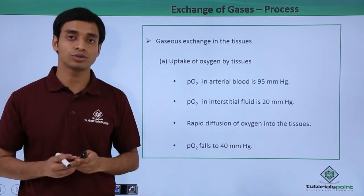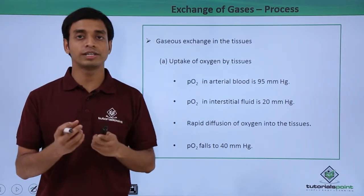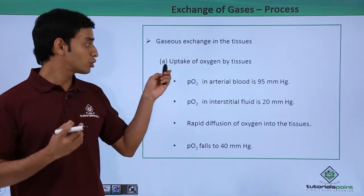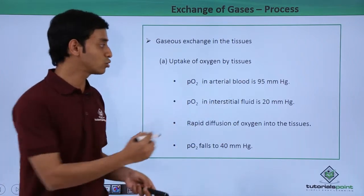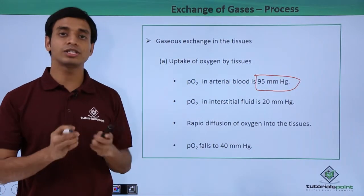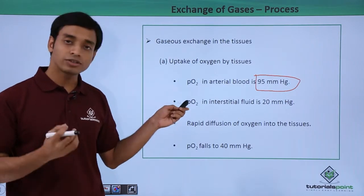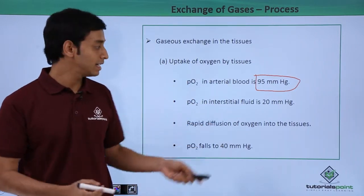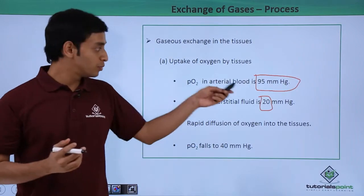Now let us look at the exchange happening in the tissues. The blood has been oxygenated while traveling through the lungs, and the partial pressure of oxygen in this oxygenated blood has raised to about 95 mmHg. This blood reaches each and every cell and tissue of our body, whereas the partial pressure in the interstitial fluid inside the cells is about 20 mmHg.